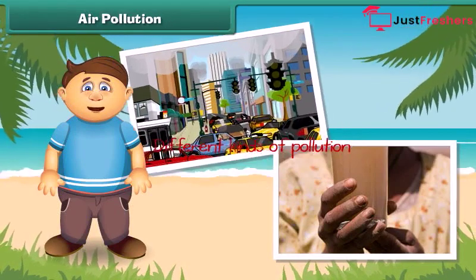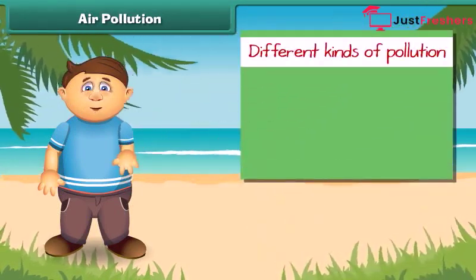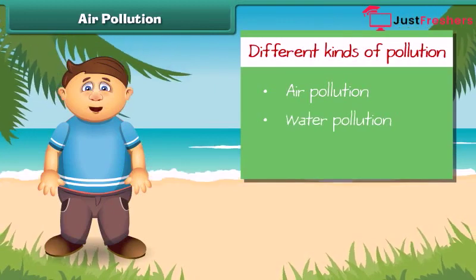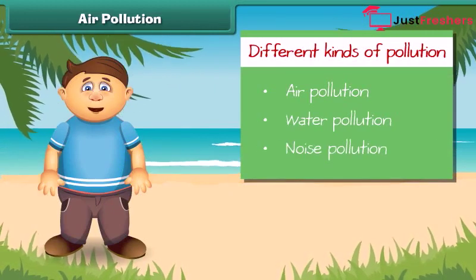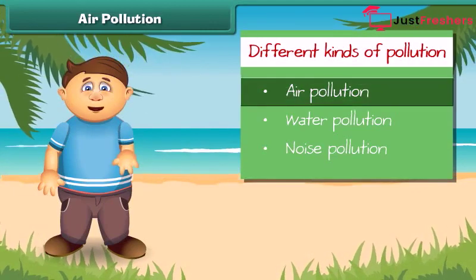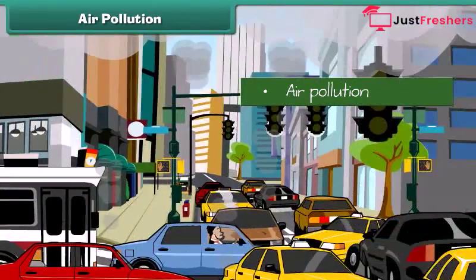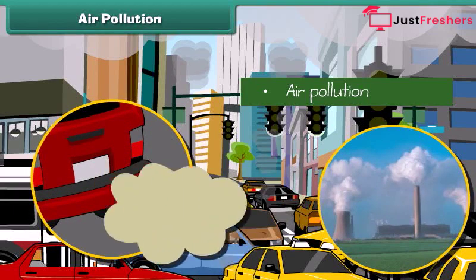Pollution is mainly of three types: air pollution, water pollution, and noise pollution. Let's first know about air pollution in detail. Air gets polluted when unwanted substances — air pollutants — enter it. These substances come due to burning of fuels and emission of poisonous gases from industries.